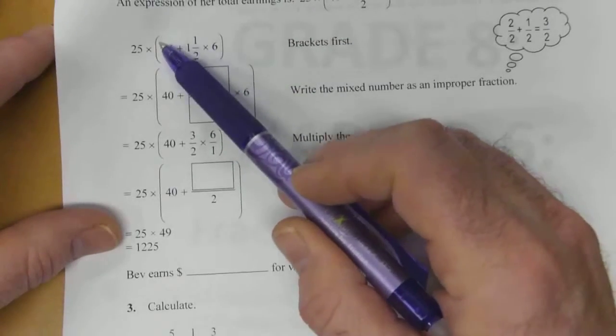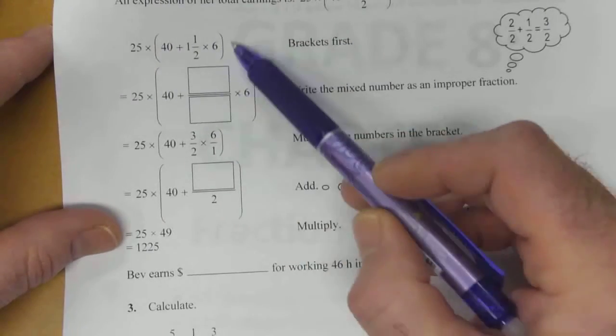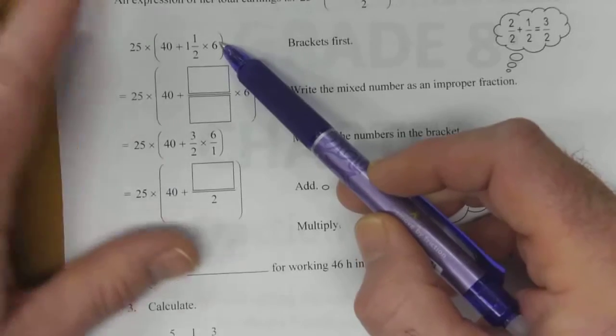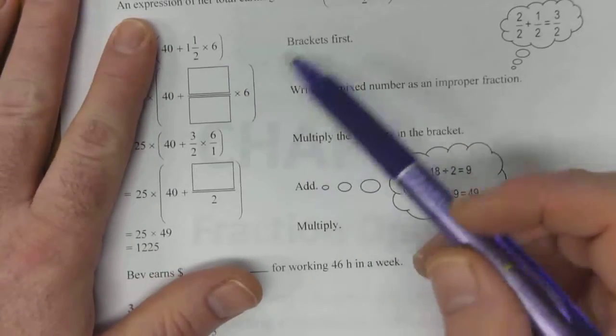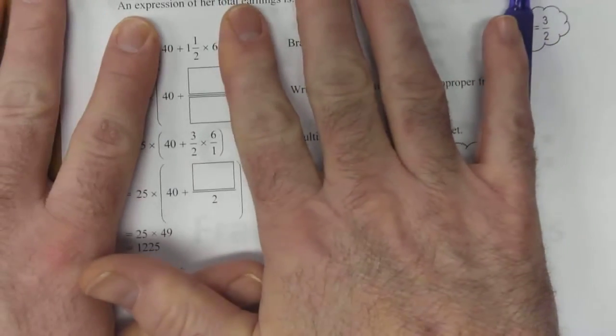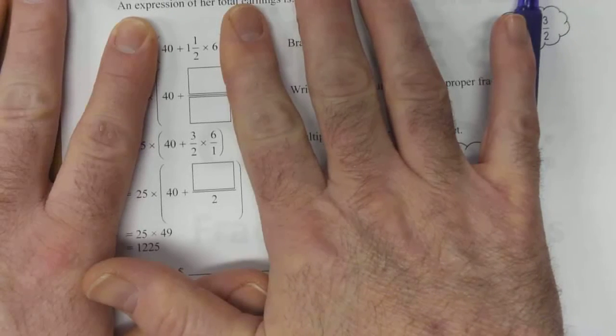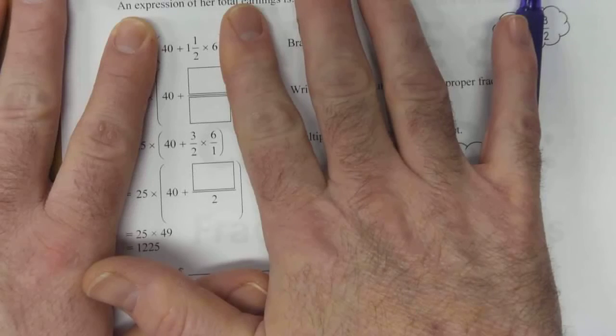So brackets come first. We're going to solve what's going on in here first. But within that, we have to look at BEDMAS again as well. Within this, we've got BEDMAS to deal with. We've got an adding and a multiplying. So we have to do the multiplying first.